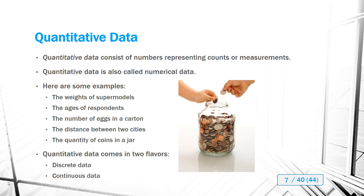Quantitative data can also be called numerical data because counts and measurements are essentially numbers. Examples include: the weights of supermodels, ages of respondents, the number of eggs in a carton, the distance between two cities, and the quantity of coins in a jar. These are all counts or measurements and represent quantitative data.